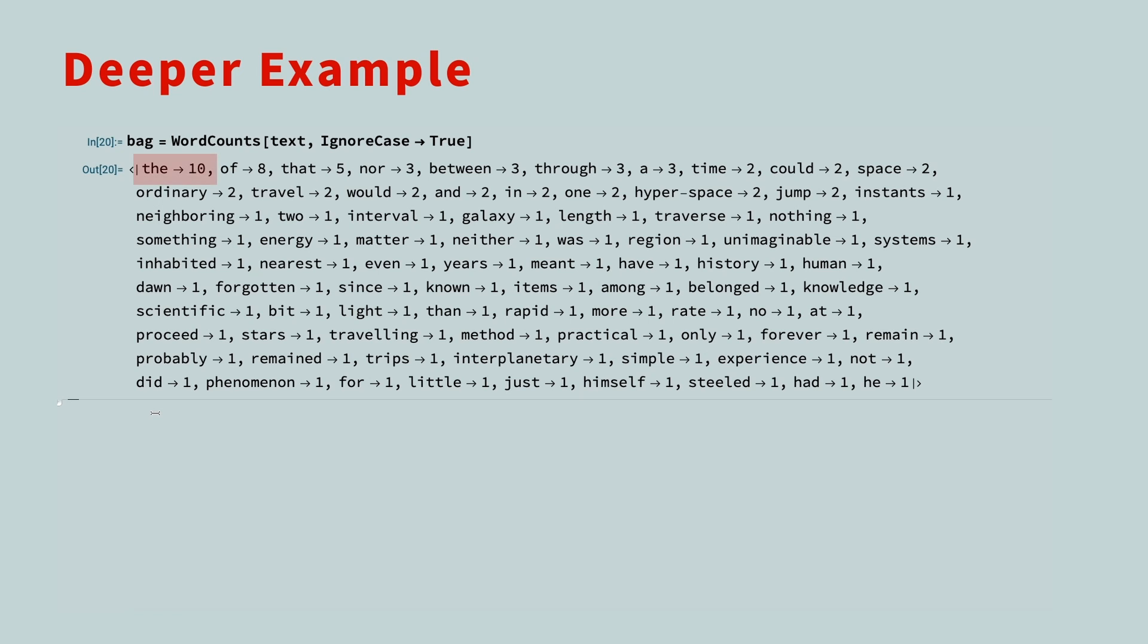The word the is used 10 times, of occurs 8 times, and so on. As you can see, most words were only used once. This is common with skilled authors who have a large vocabulary. And if we look at the number of entries in our bag of words, there are only 83 distinct words. So there are 39 words that are repeats.